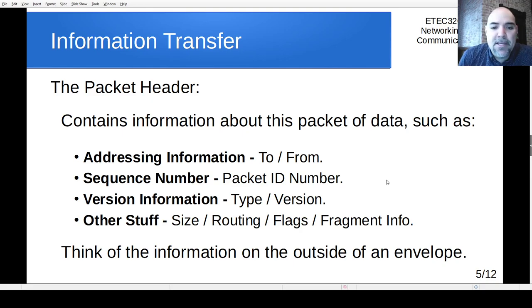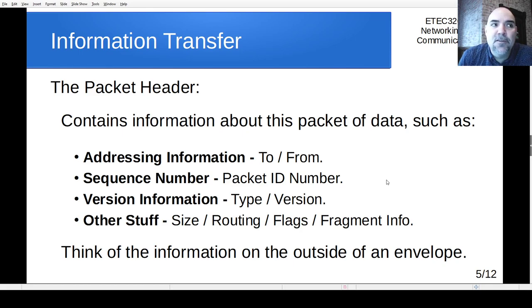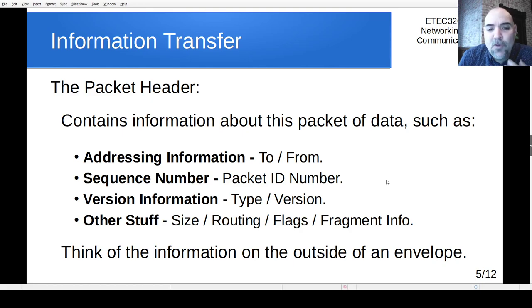There might also be version information indicating the type of packet and which version of that type it is, so the receiver knows what rules to use to reassemble it. Other header fields include the size of the packet, how much data is in it, routing information, net masks, port numbers, flags indicating something about the packet, and fragment data if the packet needs to be further divided. The main conceptual point is that the header is like what's on the outside of an envelope — required for the system to work, but not the data itself.